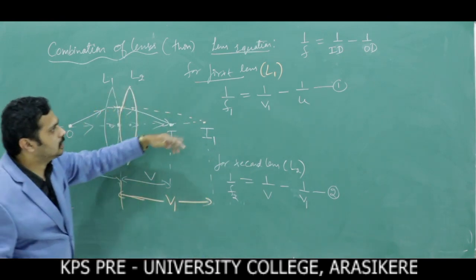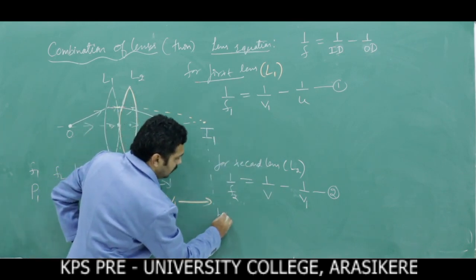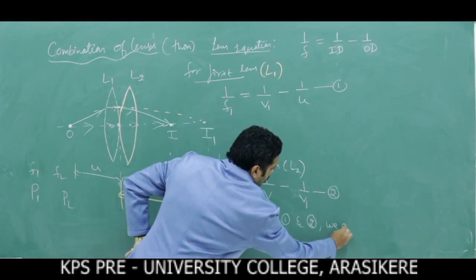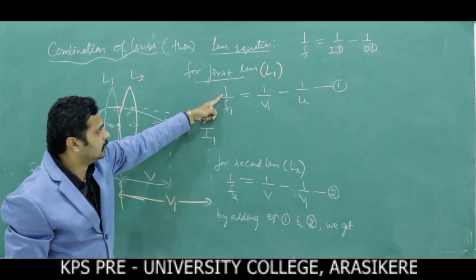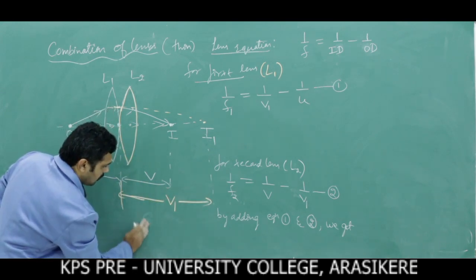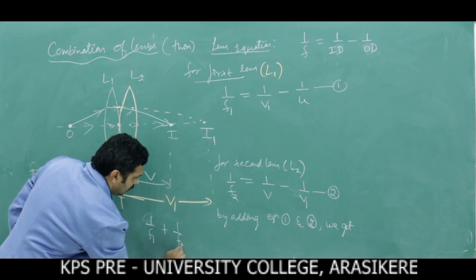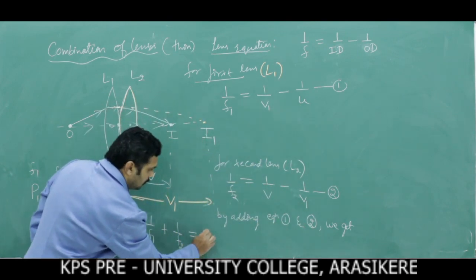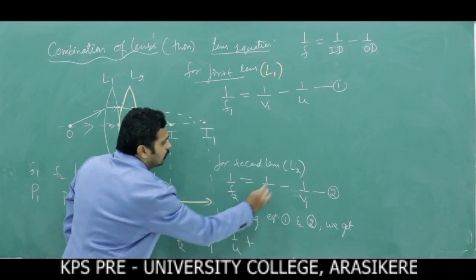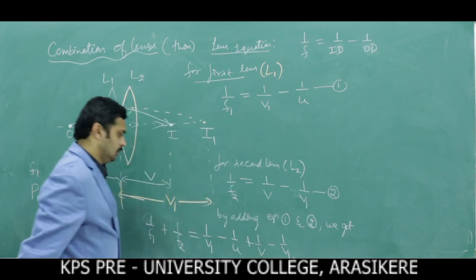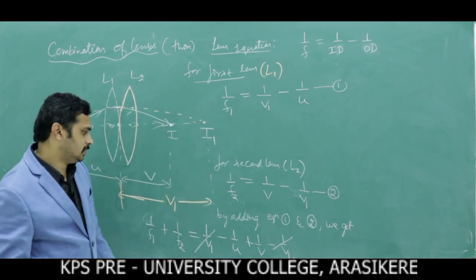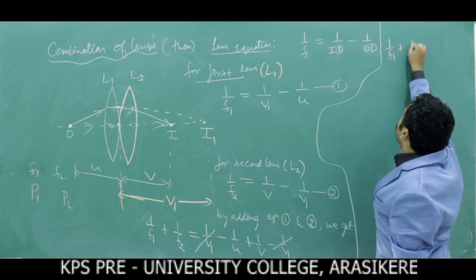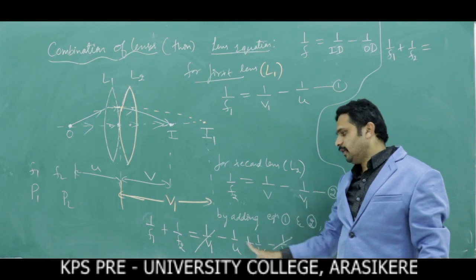Now doing the combination means adding equation 1 and equation 2. Adding both equations: 1/F1 + 1/F2 = (1/V1 − 1/U) + (1/V − 1/V1). The +1/V1 and −1/V1 terms cancel, and the remaining result is: 1/F1 + 1/F2 = 1/V − 1/U. This is equation 3.